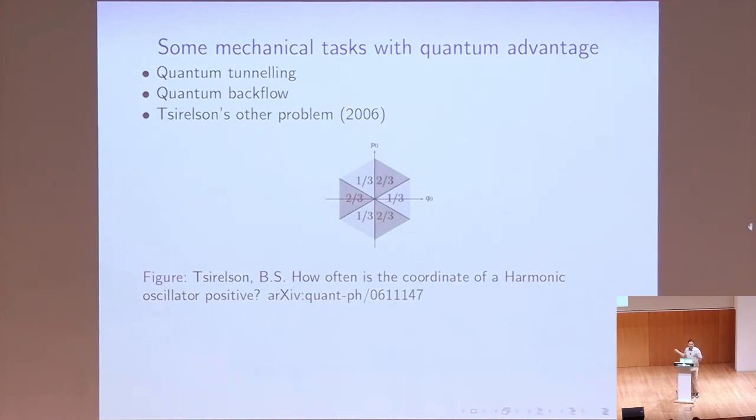And so you can divide phase space into regions where the probability is one third or two thirds. In general, that's if you start with a deterministic point. In general, if you have a harmonic oscillator in some ensemble of position, or in some ensemble on phase space, you could get some probability between one third and two thirds.